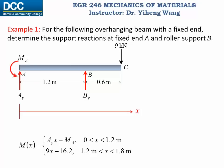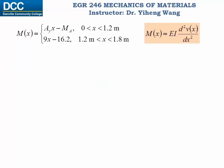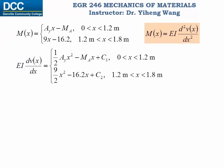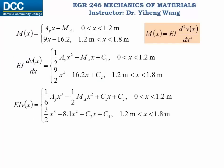Now it's time to integrate this internal bending moment function in order to get the deflection function. The internal bending moment function is integrated once, then integrated a second time with respect to x. As you can see, during the integration process these constants were inevitably generated, and we need to evaluate these constants using boundary conditions as well as continuity conditions as we learned in the previous lecture.